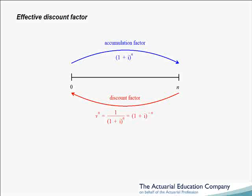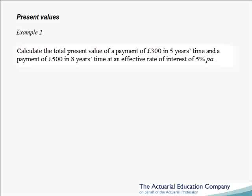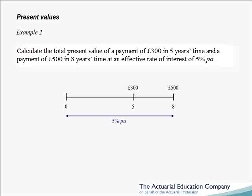Let's use this notation in some examples. Calculate the total present value of a payment of 300 pounds in 5 years time and a payment of 500 pounds in 8 years time, at an effective rate of interest of 5%. We require the present value: for 300 pounds in 5 years time, we discount over 5 years by multiplying by our effective discount factor v^5. For the payment of 500 pounds in 8 years time, the present value will be 500 times v^8, discounting that 500 pounds over 8 years.